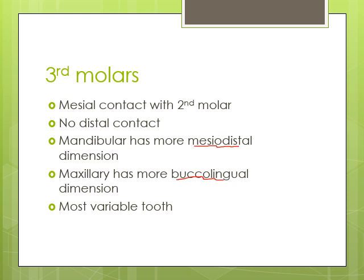In surgery, impacted third molars are very commonly seen, and you can see the variability among the crown and root of the third molars. Very interesting cases come in which we can see different root forms — roots could be fused, or there could be three or four roots present. Similarly, in the crown we can see different morphologies.